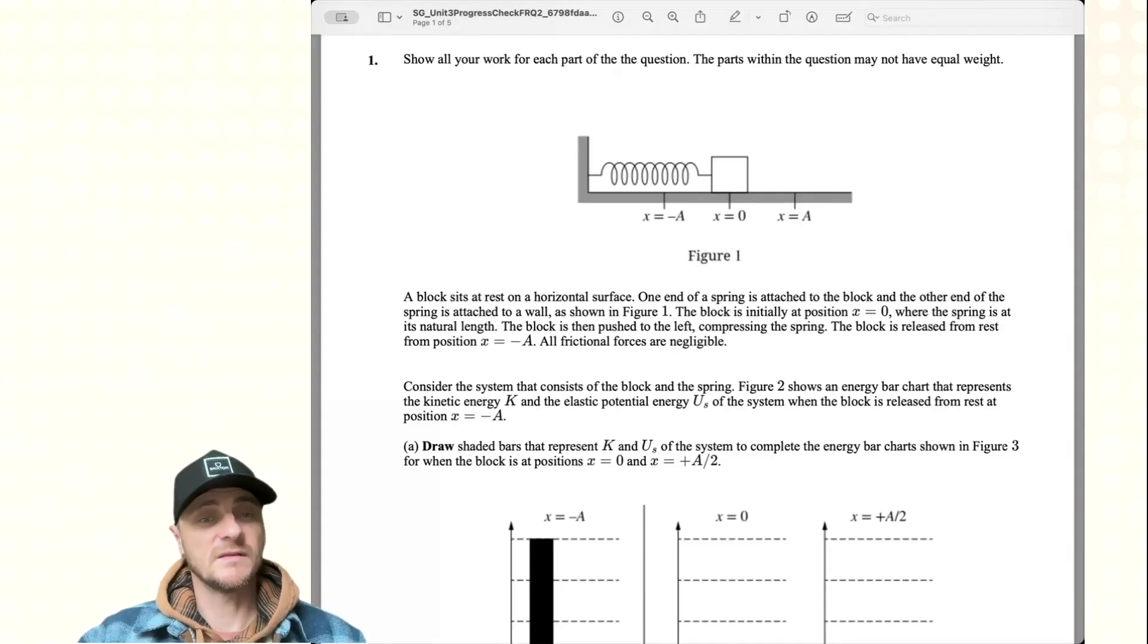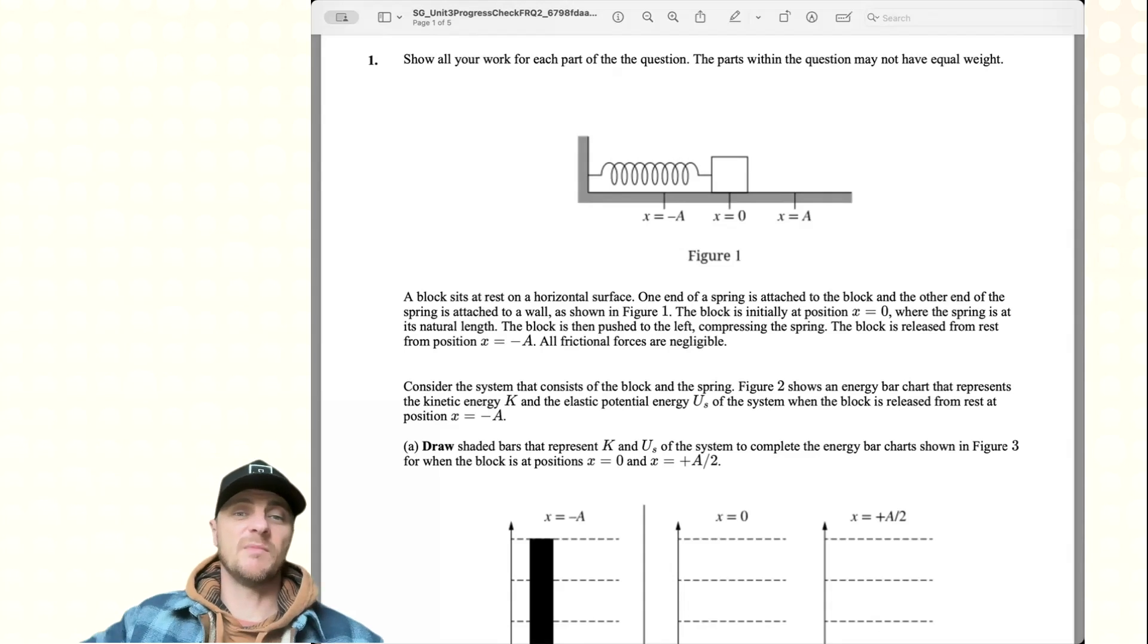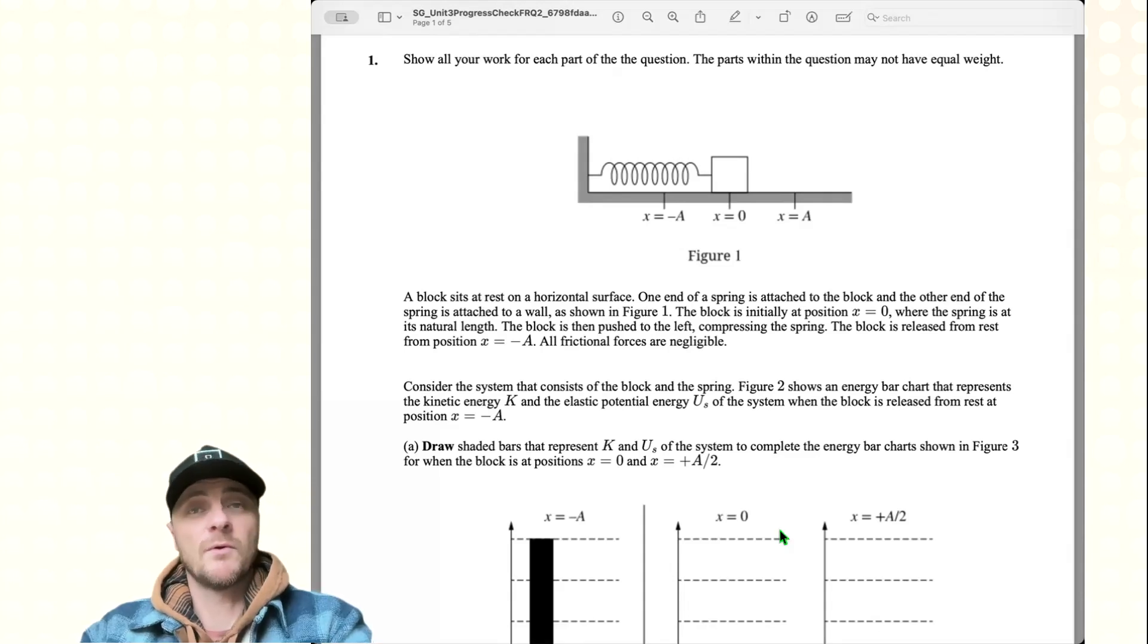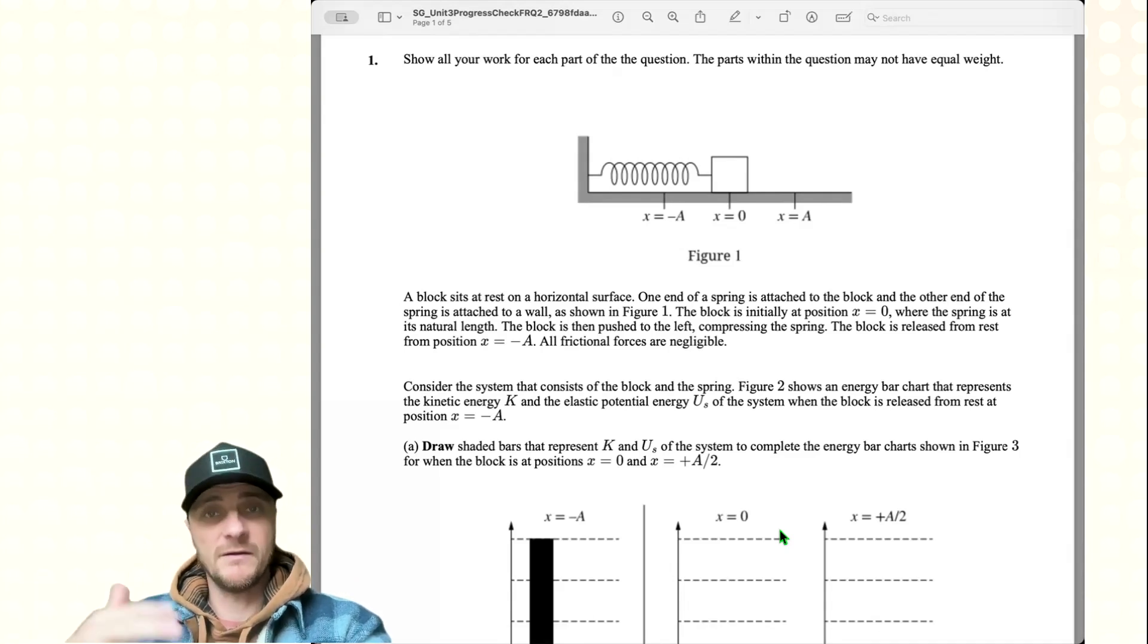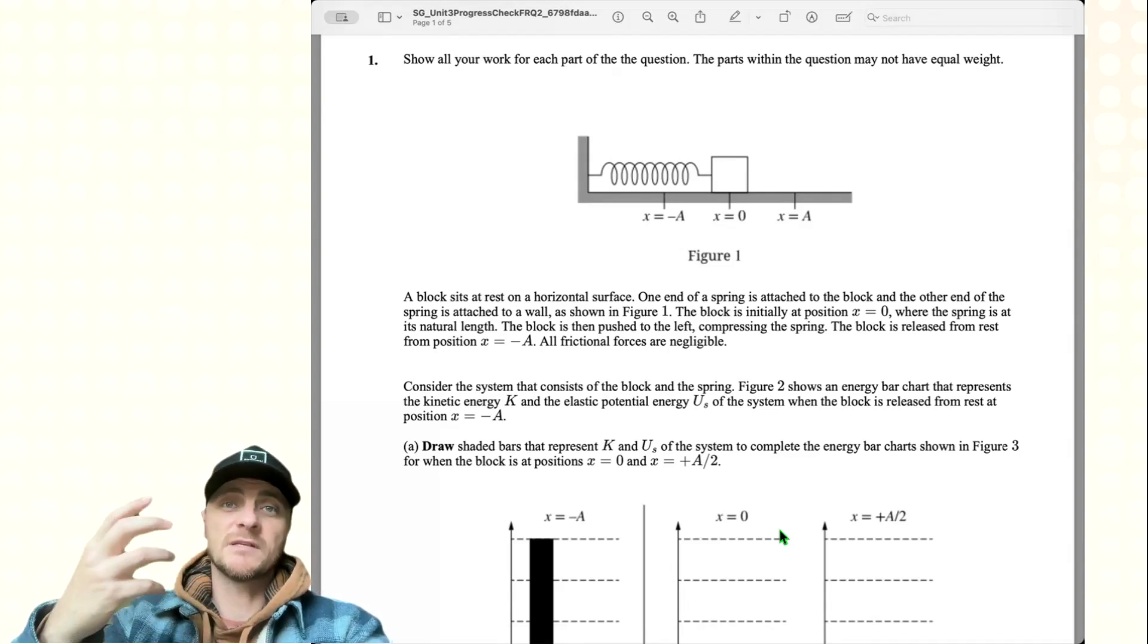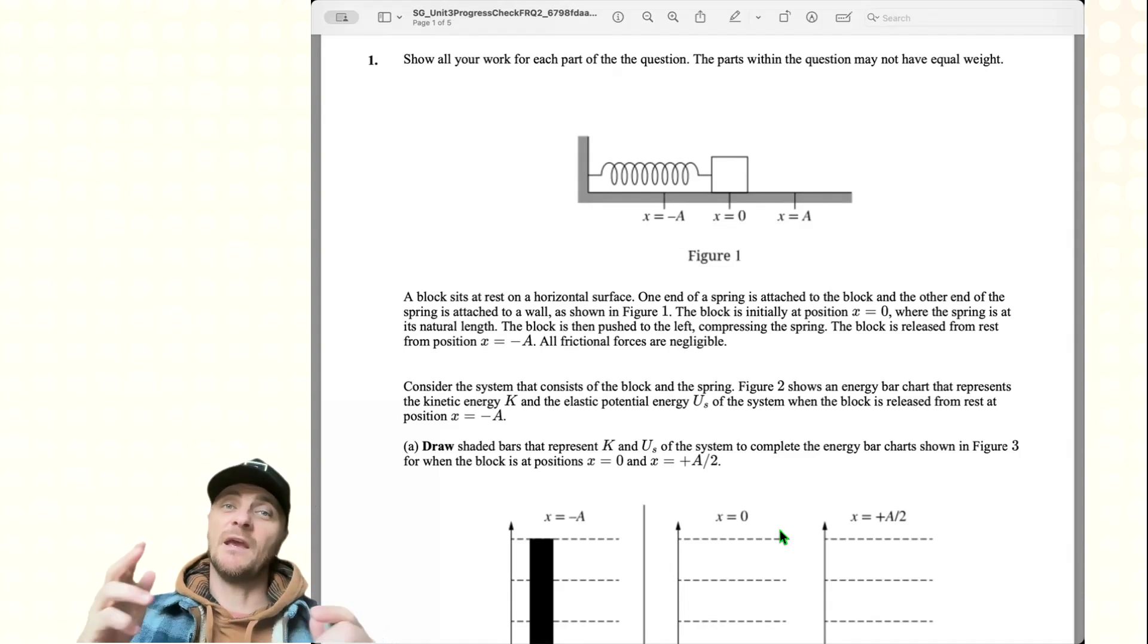Consider the system that consists of the block and the spring. Figure 2 shows an energy bar chart that represents the kinetic energy k and the elastic potential energy u sub s of the system when the block is released from rest at position x equals negative a. Before we do part a, remember the total mechanical energy of this spring block system is tied up in both items. Sometimes the energy is completely in the block, sometimes completely in the spring. We call the energy in the block the kinetic energy and the energy in the spring is the elastic potential energy.